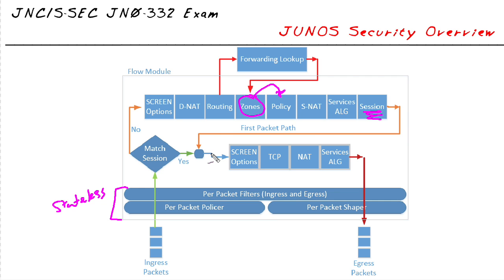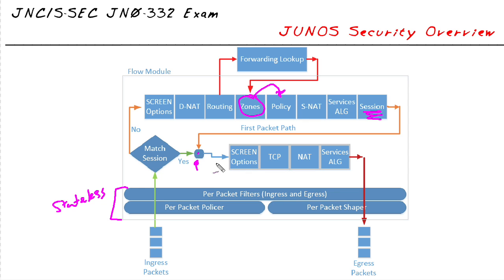The packet is then handed off to the flow table lookup. Once I have an entry in the flow table, this is where I actually apply things. I apply my firewall options based on the zones and policy, apply basic TCP features to check for DOS attacks or anomalous packets, and apply any NAT features — destination and/or source — along with my services ALGs.